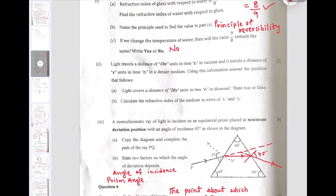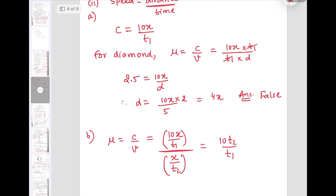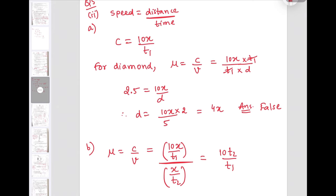Next question: Light travels a distance of 10x units in time T1 in vacuum and it travels a distance of x units in time T2 in a denser medium. Using this information, answer the questions. First: light covers a distance 20x units in time T1 in diamond, is this statement true or false? To find it out, let us use the fact that speed equals distance upon time. If I write the speed of light in vacuum, C equals 10x upon T1. If I use mu for diamond, that is C upon V and substitute the values, we get 10x upon D as mu. Refractive index of diamond is 2.52, but for simplicity I am taking 2.5.